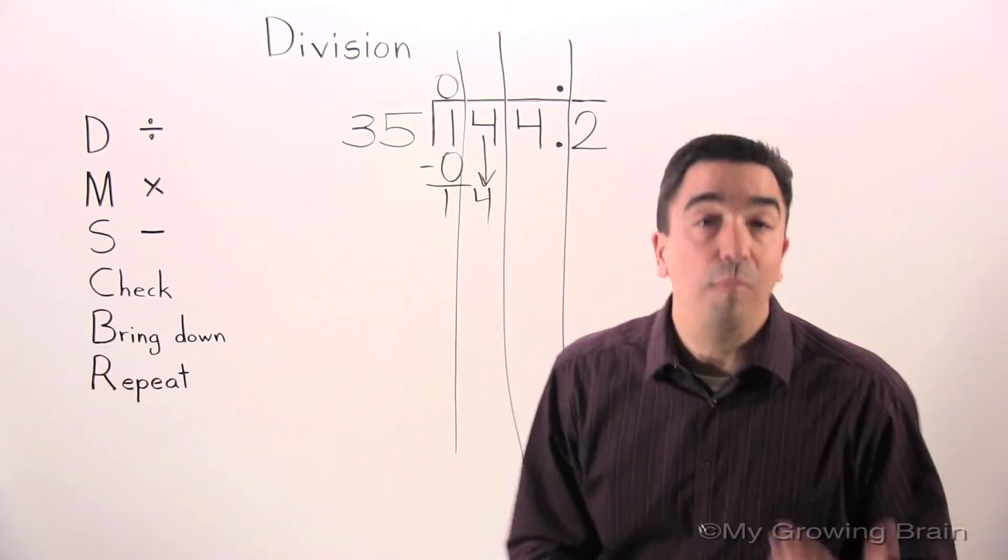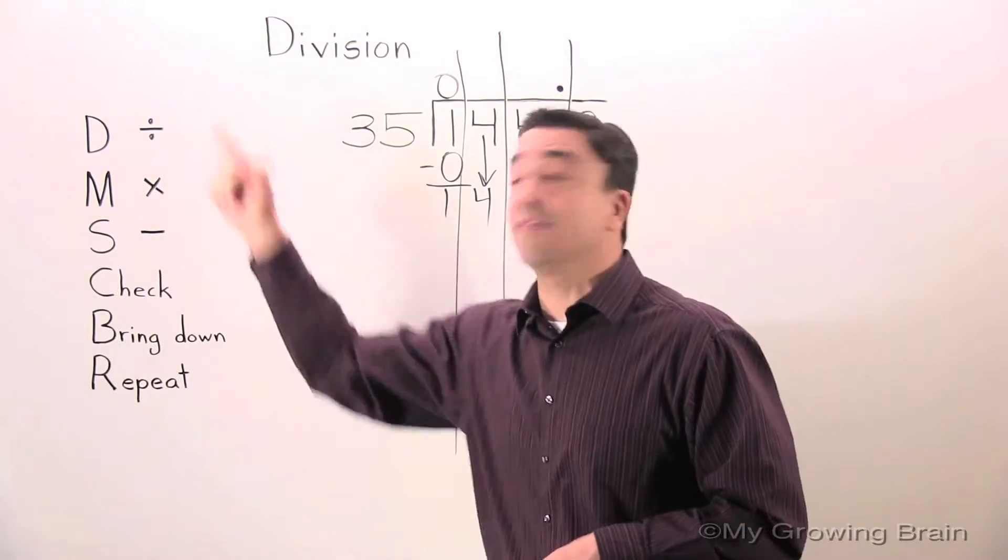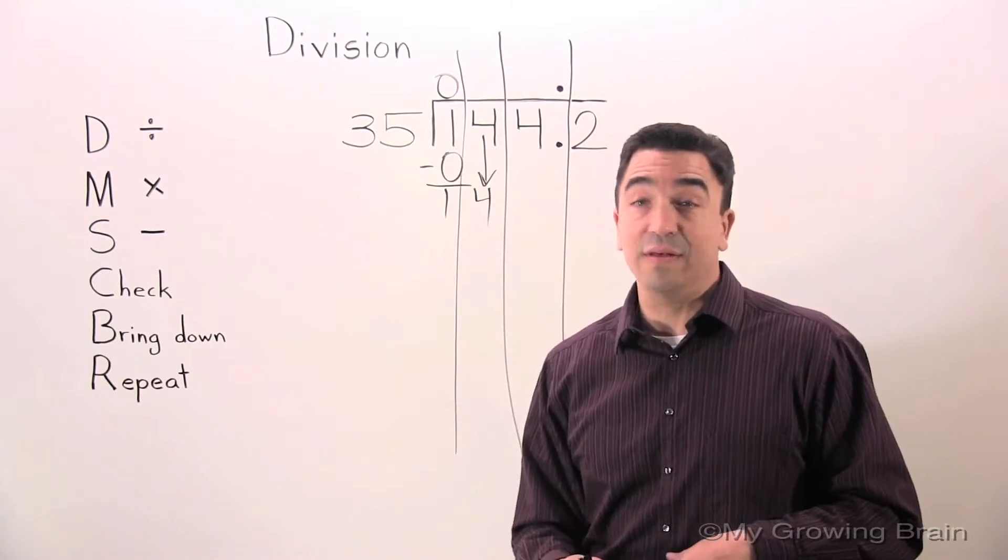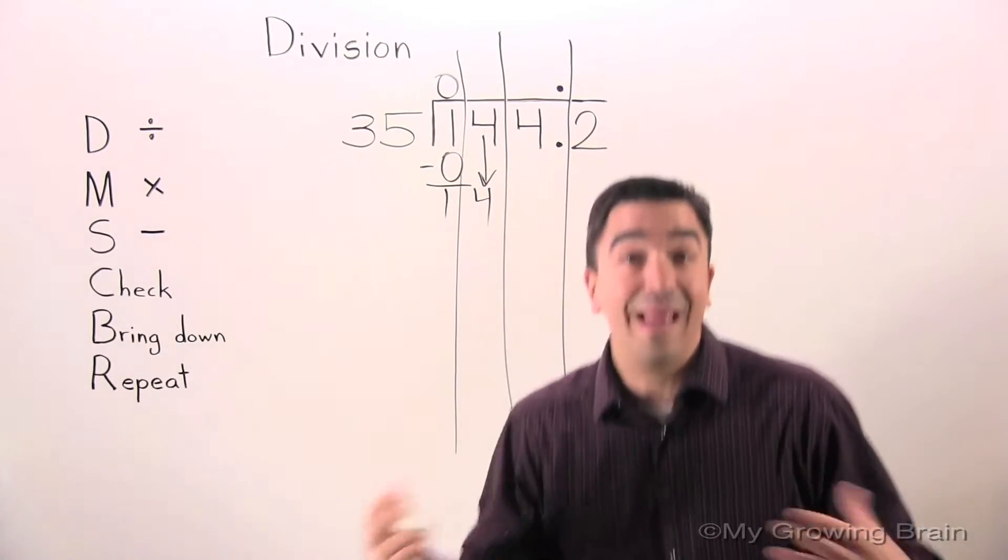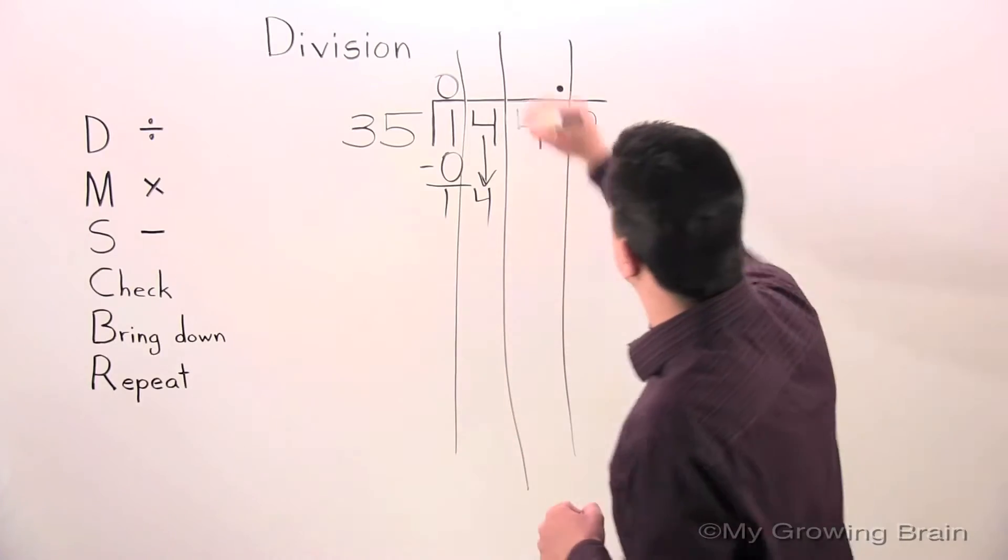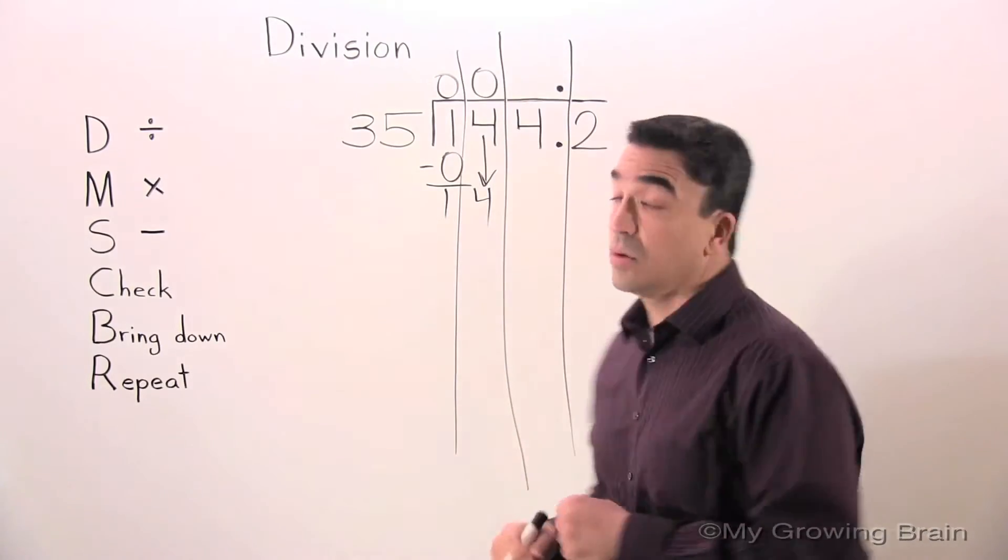Next step: repeat. Repeat the whole process. Back to the top: divide. 14 divided by 35. Can't do it. Use a 0.